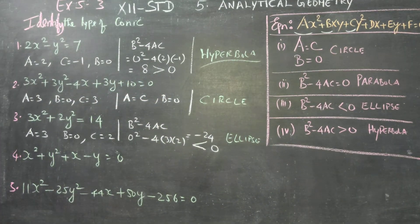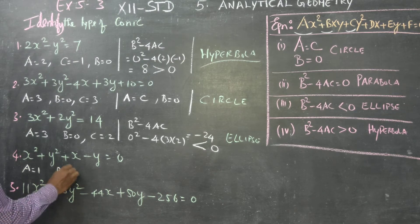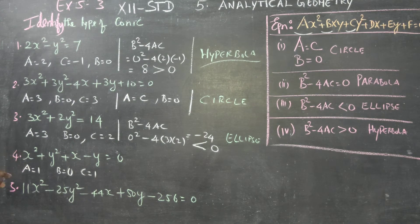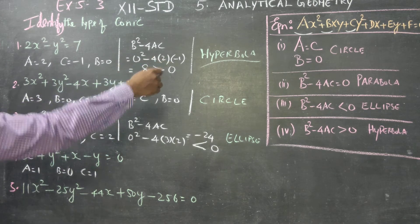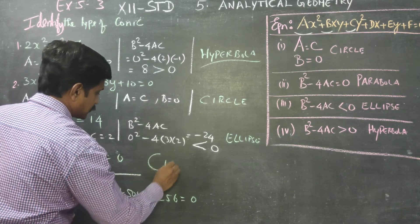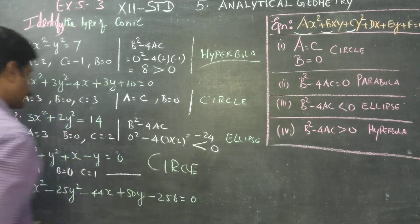Sum number 4: my a is equal to 1. There is no xy term, so b equals 0. My c is equal to 1. Since a equals c equals 1 and b equals 0, the first condition is satisfied. Therefore, this sum is a circle.